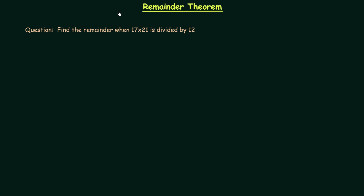In the last few lectures we completed cyclicity of unit digit and now we will start a new topic which is remainder theorem. Remainder theorem is an important theorem and it is used to find out the remainder of a division which we cannot perform easily. Sometimes we have to divide a number by another number and the division is not so easy to perform. In such cases we can use the remainder theorem. I will list down a few typical cases in which we use remainder theorem.